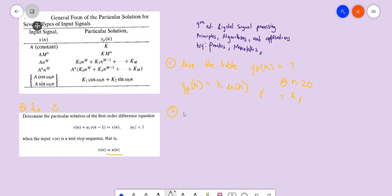Step two would be substitute y sub n into particular solution because we're finding that. Basically what happens here is y sub p of n plus a sub one y sub p of n minus one equals our input signal which is x of n.